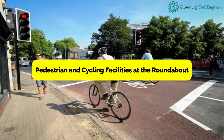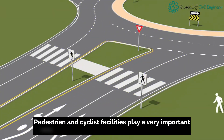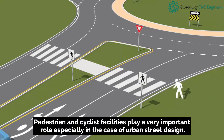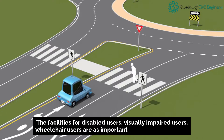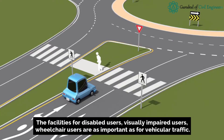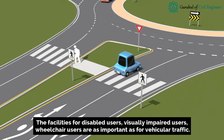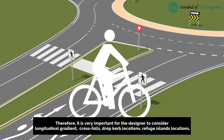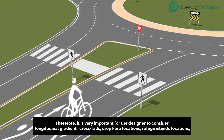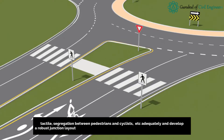Pedestrian and cycling facilities at the roundabout play a very important role, especially in urban street design. The facilities for disabled users, visually impaired users, and wheelchair users are as important as for vehicular traffic. Therefore, it is very important for the designer to consider longitudinal gradient, cross falls, drop curb locations, refuge island locations, tactile paving, and segregation between pedestrians and cyclists, to develop a robust junction layout that facilitates road user movements efficiently and comfortably.